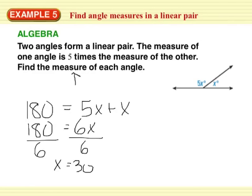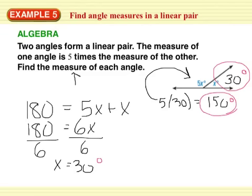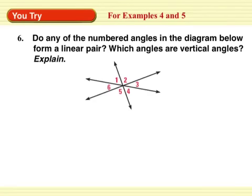Find the measure of each angle — just substitute. I have 5 times 30 equals 150. That's that angle. And this angle is just plain old 30. So I have one answer of 150 degrees and another of 30 degrees. Push pause right now, finish the problem, and then push play.